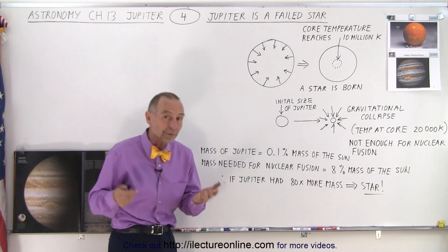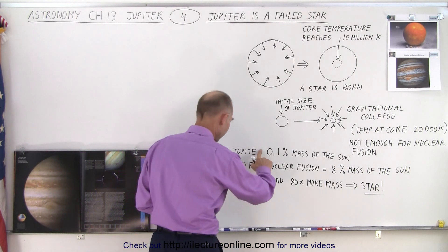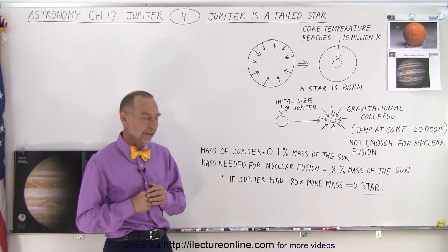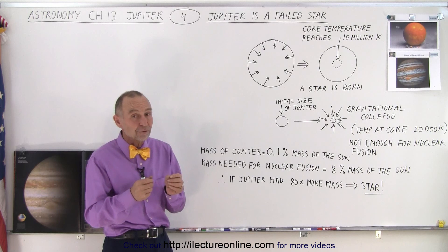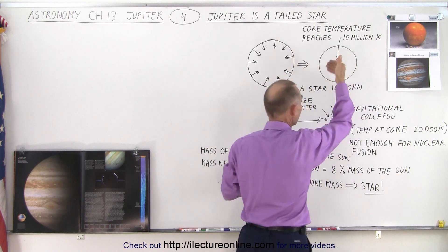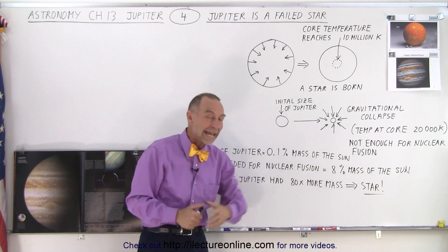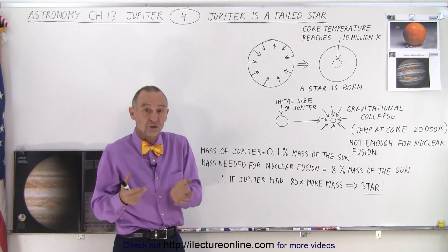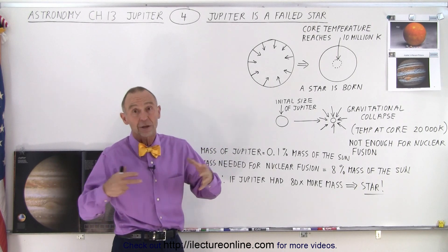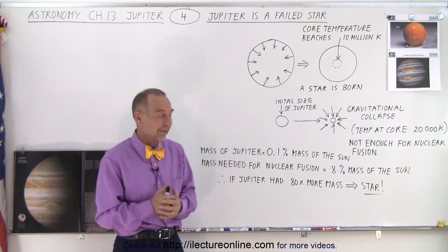So how big would Jupiter have to be for it to have become a star? The mass of Jupiter is about 0.1 percent the mass of the Sun. The minimum mass needed for a star — enough mass to generate the pressure and therefore the temperature of 10 million Kelvin to start nuclear fusion — well that has to be about 8 percent the mass of the Sun. There are plenty of stars that size; they just have more mass packed into a smaller volume, so they're very dense and very hot at the center.